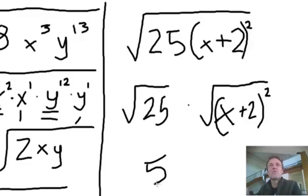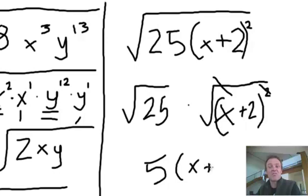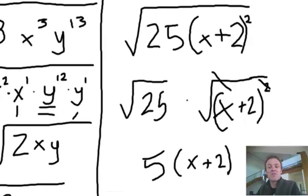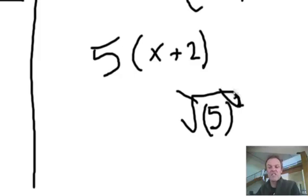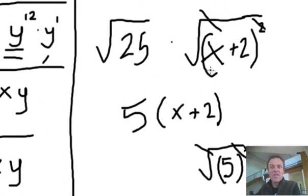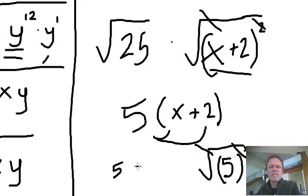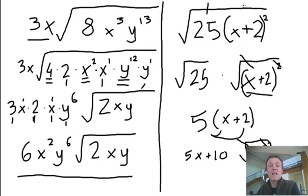Remember this: when you square a square root, or square root a square, they cancel. For example, √5 squared is 25, and if I square root that I go back to 5 — the operations cancel. So the square root of (x+2)² is just x+2. And if you multiply that out, 5 times (x+2) using the distributive law gives 5x+10.